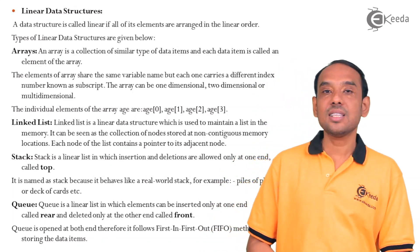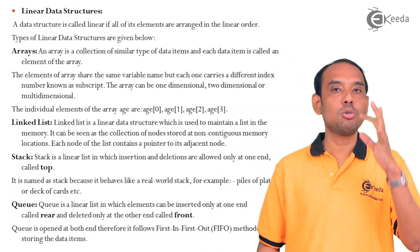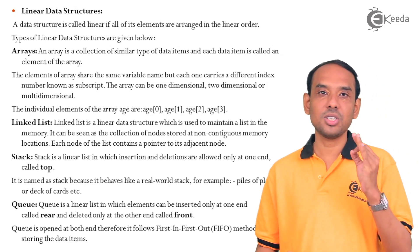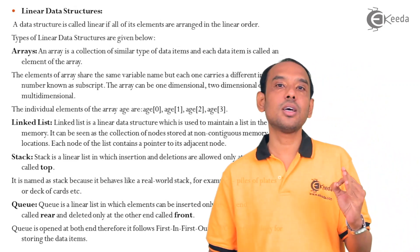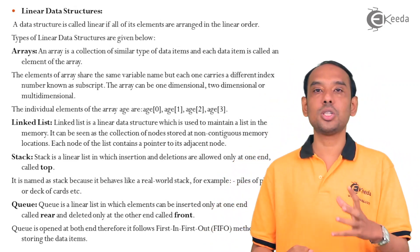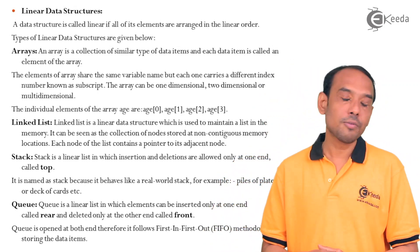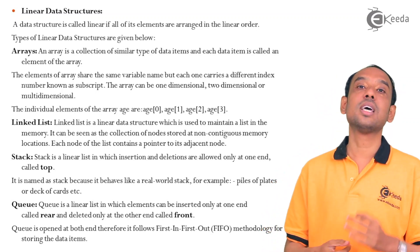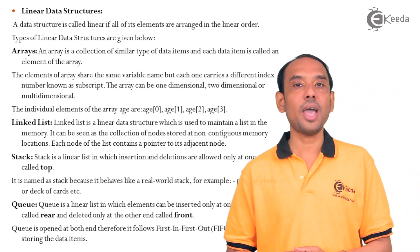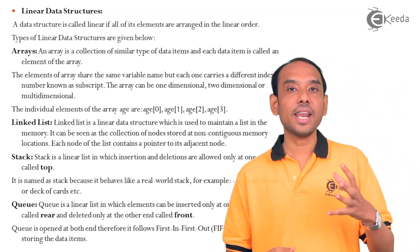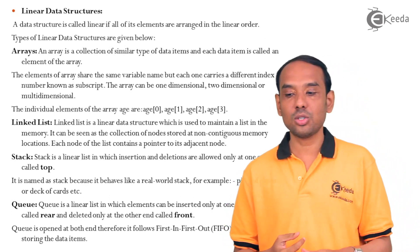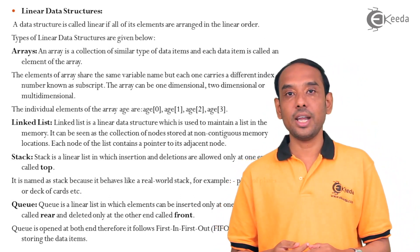Non-primitive data types are user-defined data types. Their implementation is based on user choice. The first type under this category is Array. An array is a collection of similar kinds of data items.